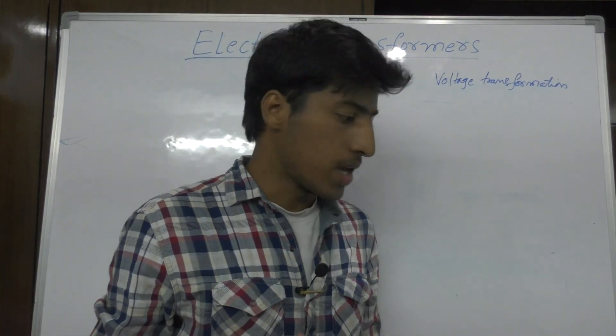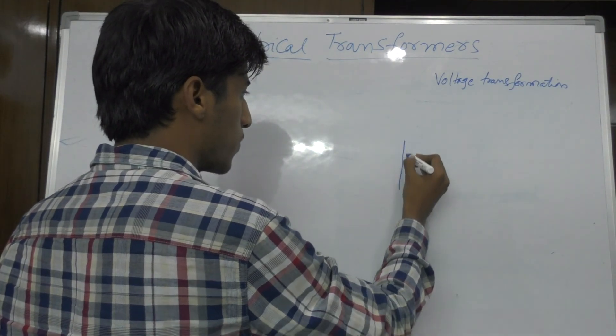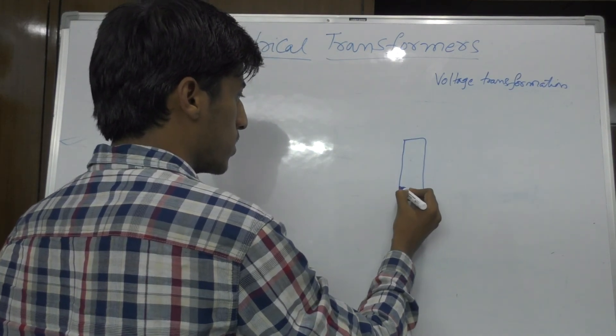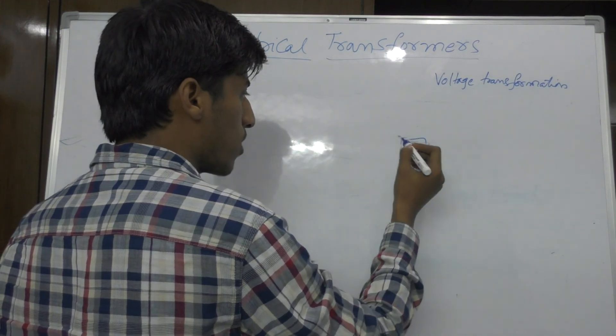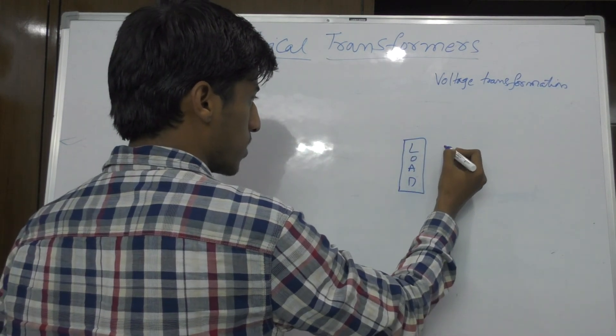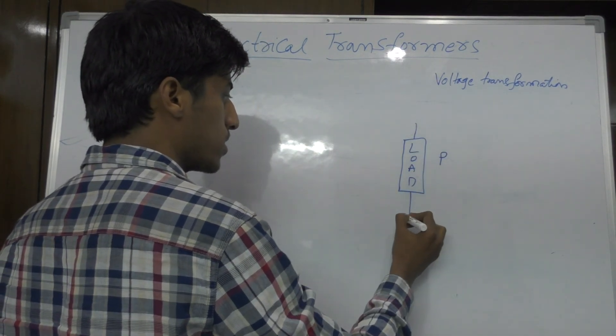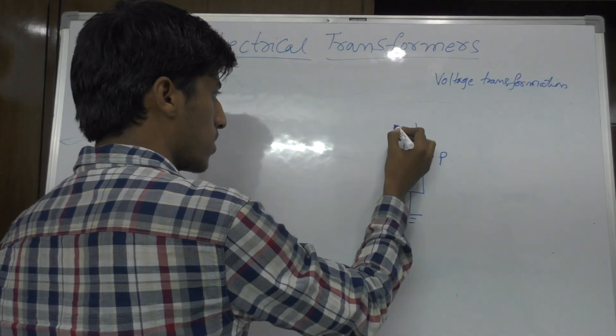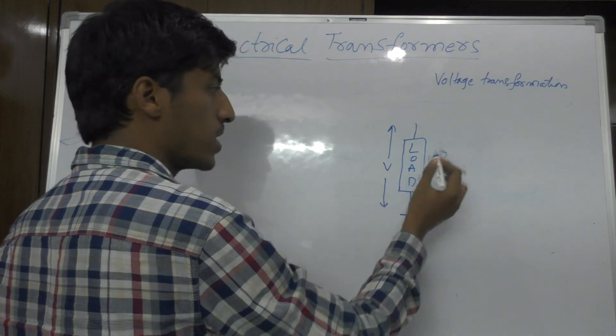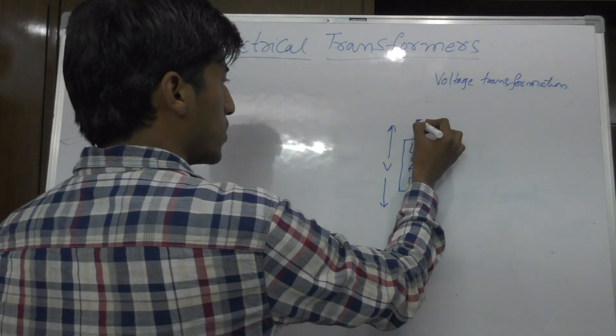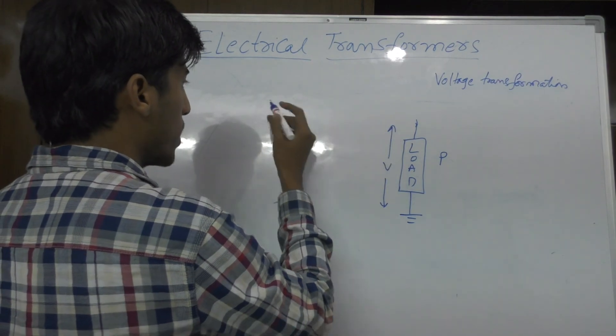I will make this point more clear by taking an example. Assume this is a load. The power requirement of this particular load is P and for this load the voltage is V. V is the voltage and P is the power, and this load is getting power through a transmission line.